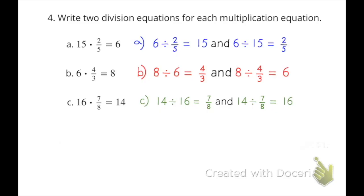Part B. Six times four-thirds equals eight. That can be written as eight divided by six equals four-thirds and eight divided by four-thirds equals six.